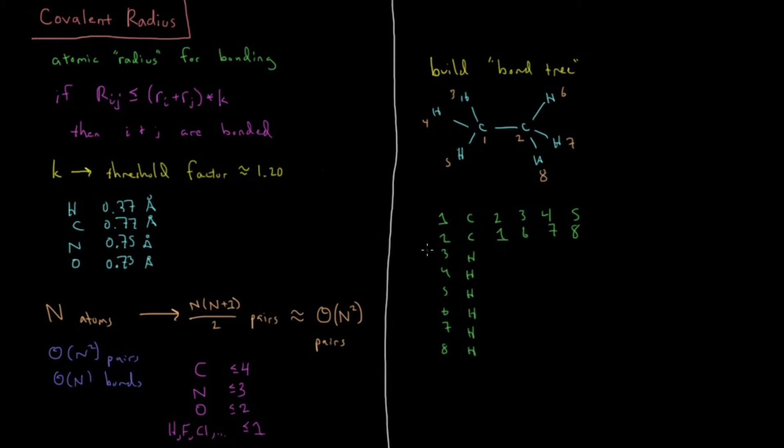For the hydrogens, 3, 4, and 5 are bonded to carbon one, and 6, 7, and 8 are bonded to carbon two. Now using this information, when we talk about bond angles and torsions, we don't have to search through all the sets of three and four atoms. We only have to cleverly search through this type of tree, and it's going to be a linear scaling operation from there.